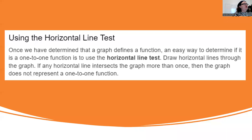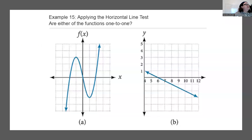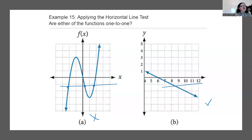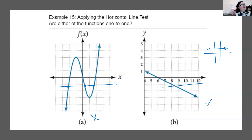Using the horizontal line test: once we know a graph defines a function, we use the horizontal line test to check if it's one-to-one. Vertical for function, horizontal for one-to-one. If any horizontal line intersects the graph more than once, it's not one-to-one. The first graph shown — a horizontal line hits three points — it's a function but not one-to-one. The second graph — a horizontal line hits only one point — it is one-to-one. A horizontal line is a function but not one-to-one. That's it for section 3.1 — see you at 3.2.